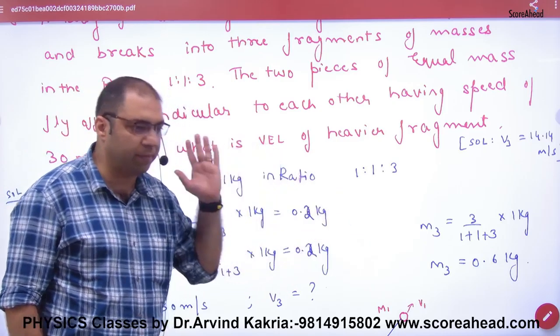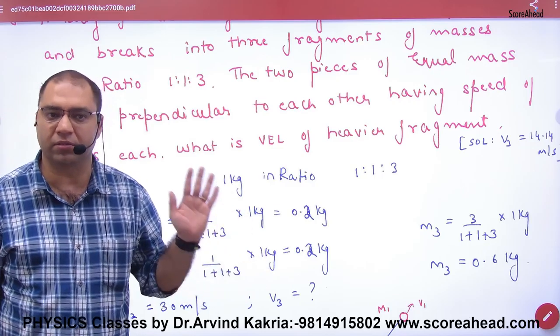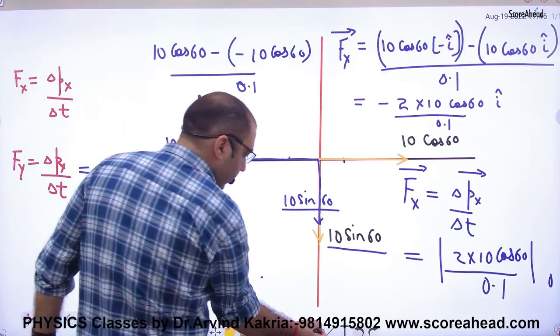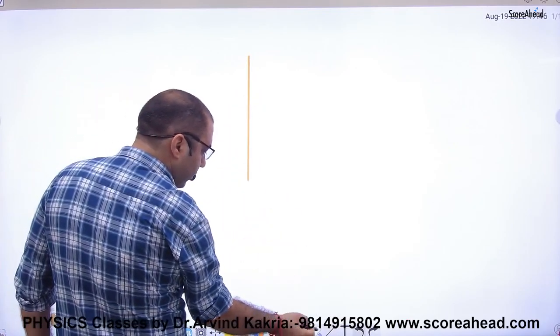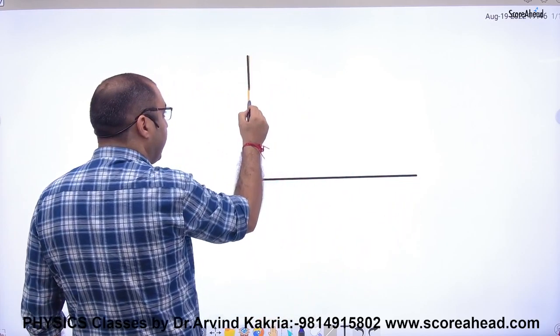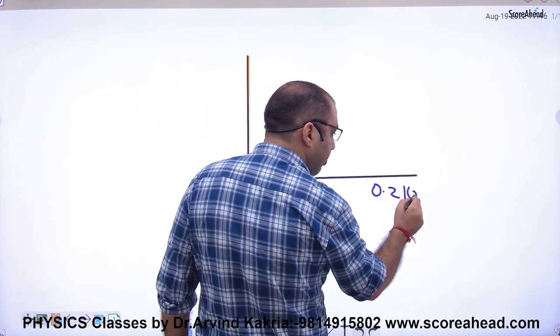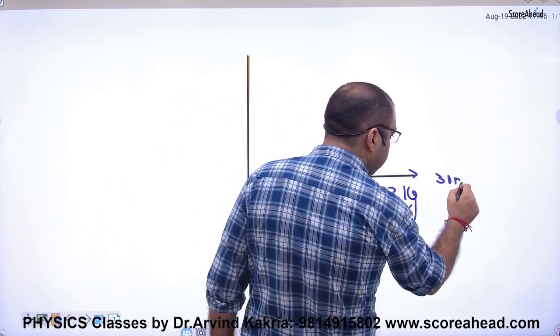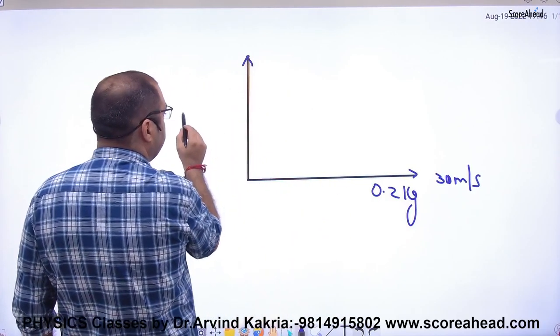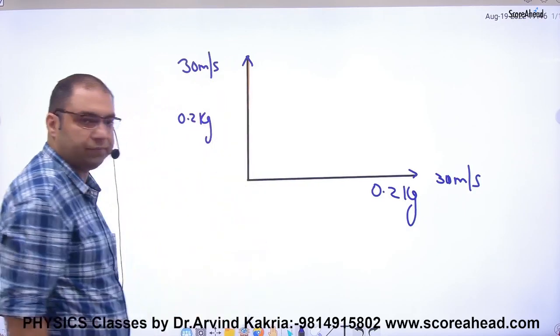The first particle has mass 0.2 kg and velocity 30 meters per second along the x-axis. The second particle has mass 0.2 kg and velocity 30 meters per second along the y-axis.